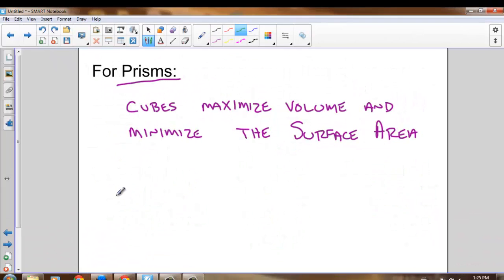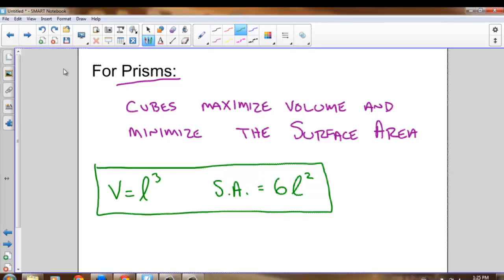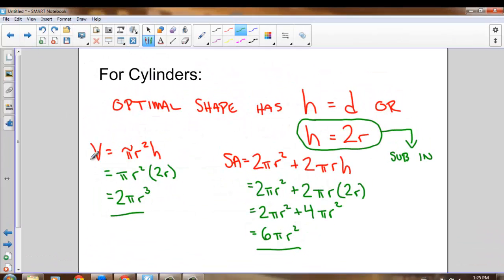So when we're dealing with prisms, and we're optimizing prisms, we're looking for prisms that are cubes. So our volume is equal to L cubed. And our surface area is equal to 6 times the length squared. Those are the two formulas you need to use when you're optimizing prisms. When we're optimizing cylinders, we're looking for the volume equation. Volume equals 2 pi r cubed, and the surface area equation of 6 pi r squared.